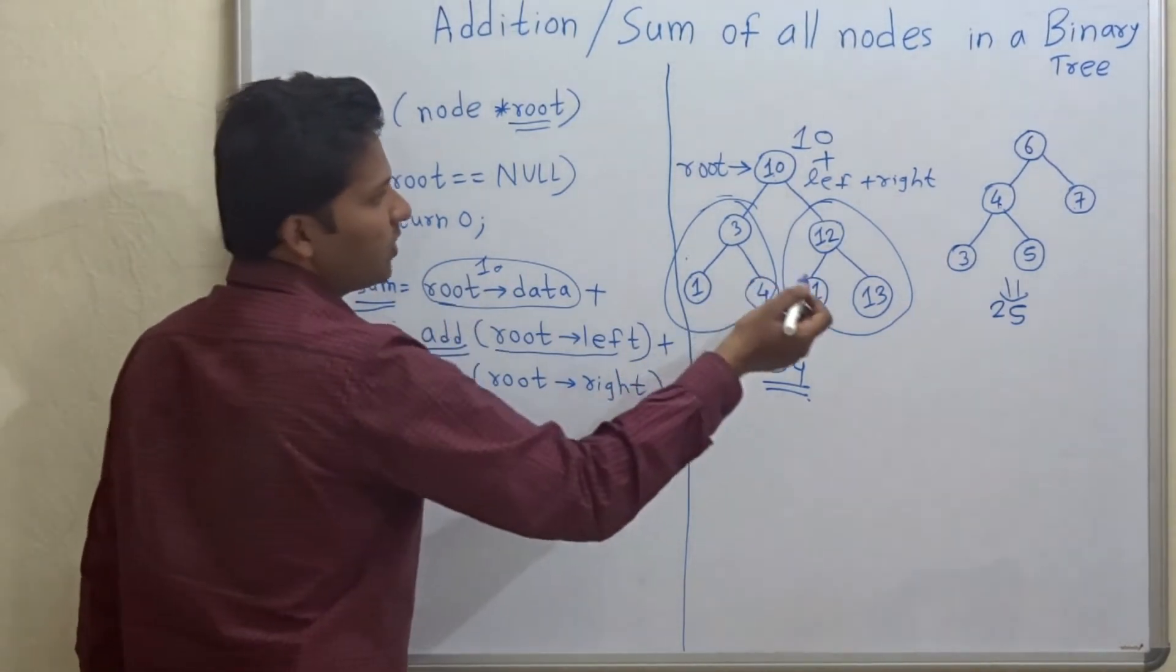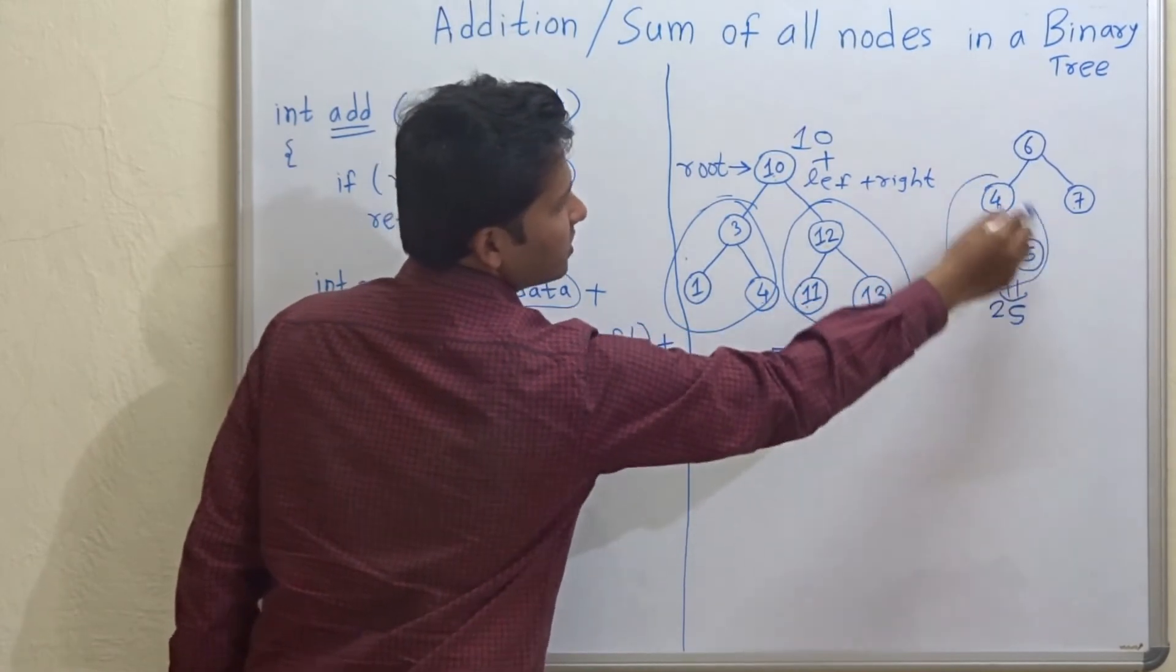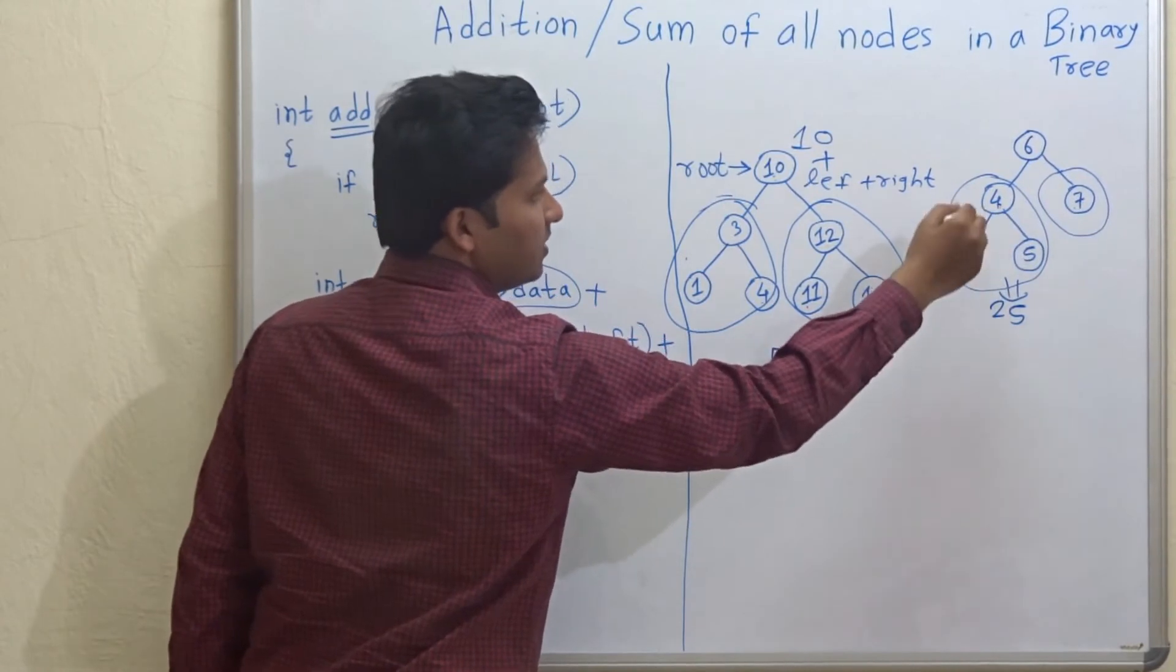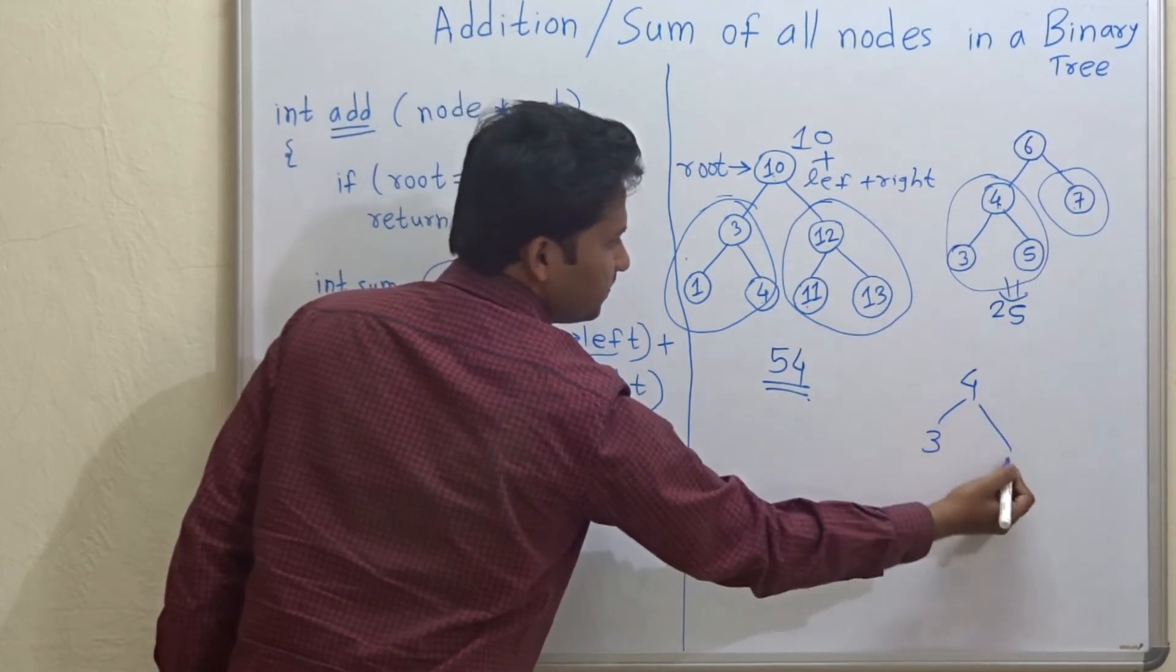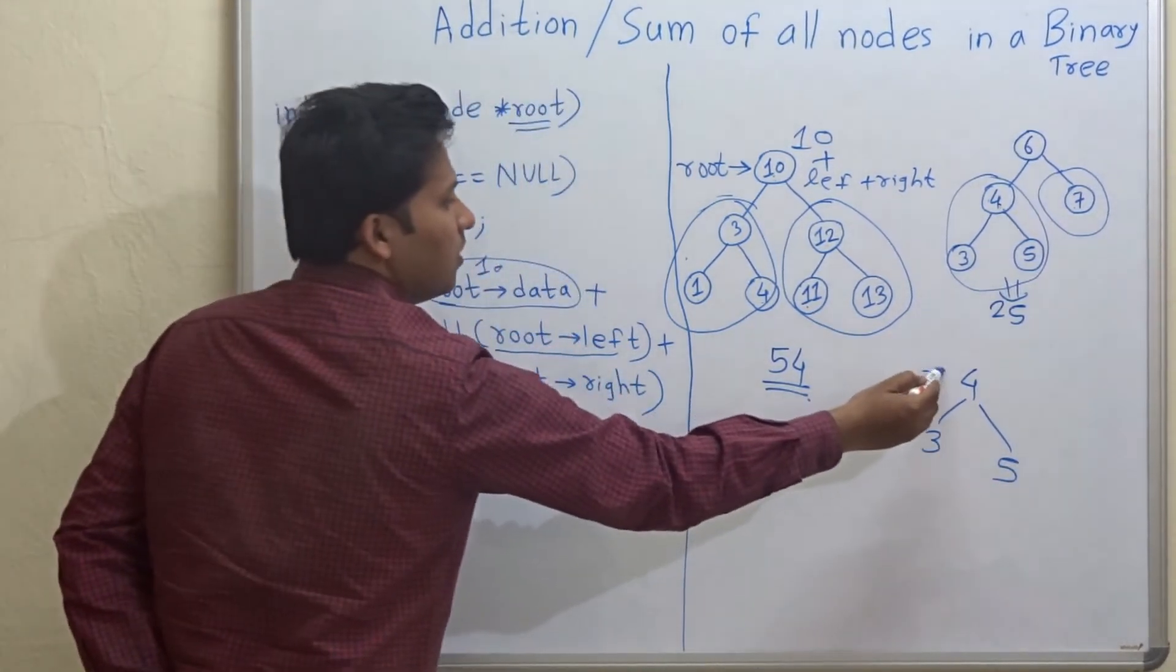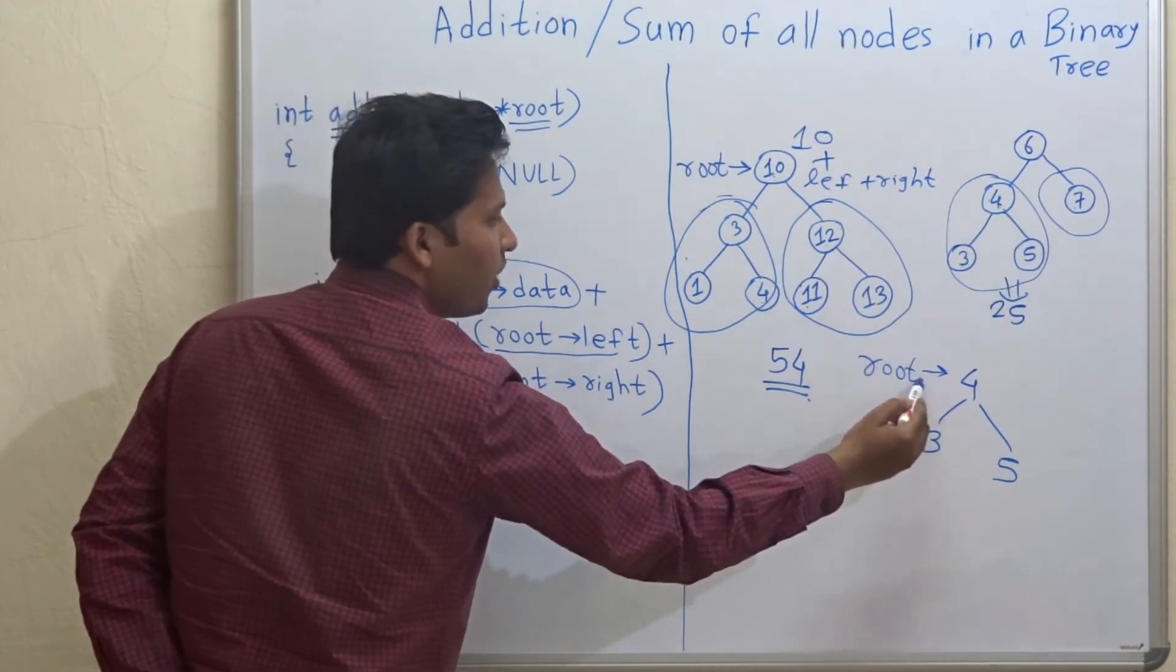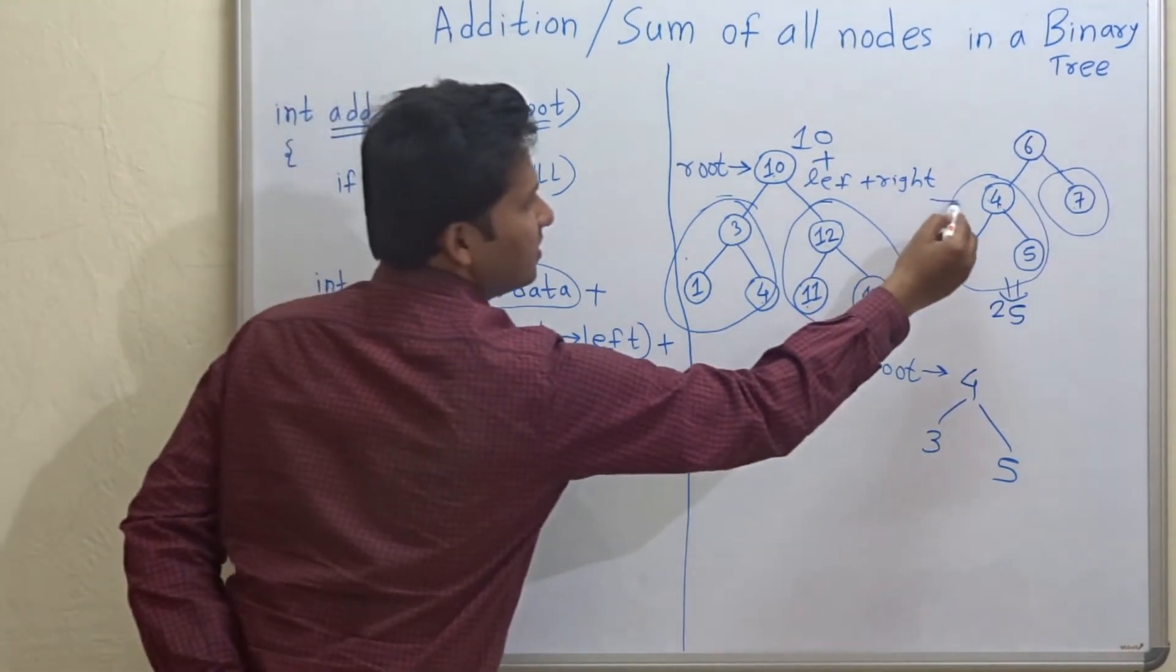So for example, in this tree, six plus this is the left sub tree and this is the right sub tree. Again, when four is passed as a root, this is seen as this tree. So the function will point, means the variable root will point to 4 as the root. So this is the new root.